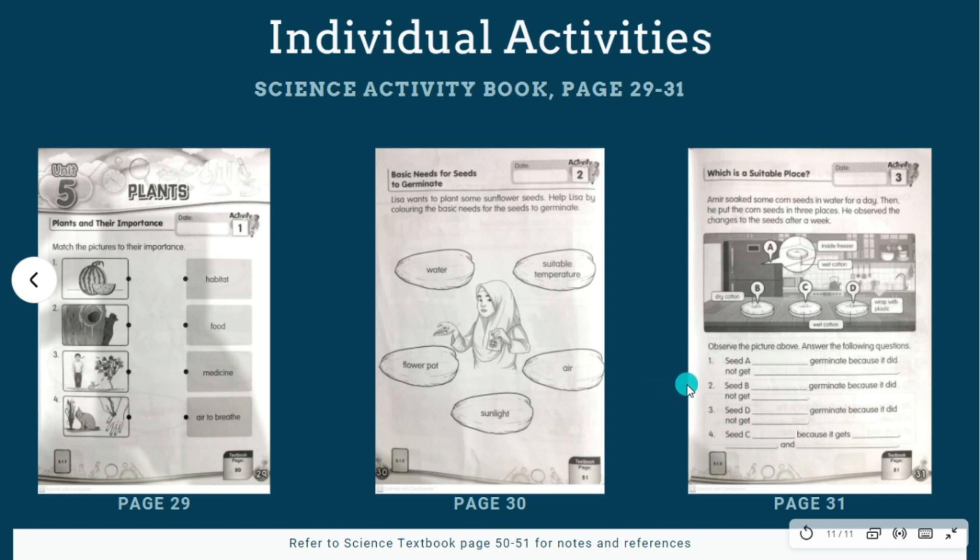That's the answer for number one: not germinate, and suitable temperature. Please write down your answer on the line. Number two, seed B. Where does Amer place seed B? Seed B, Amer put it on the dry cotton. Dry cotton. Remember, seeds need water to germinate. So is it going to germinate on the dry cotton? Obviously not. So seed B not germinate because it did not get water.